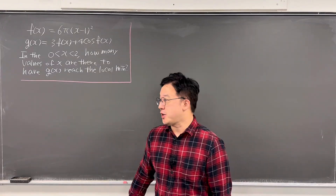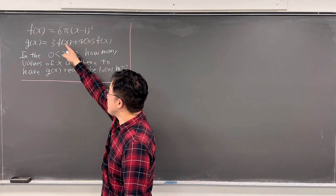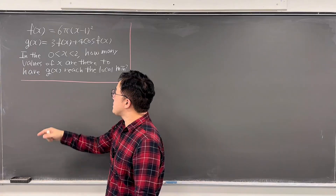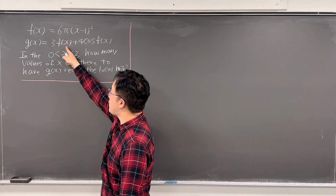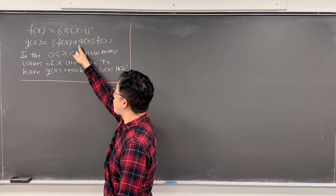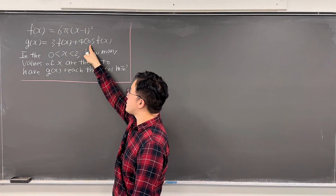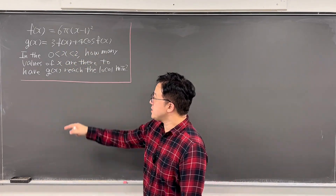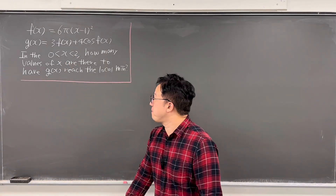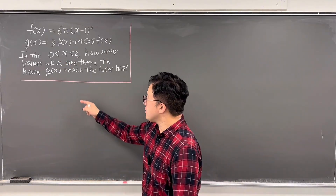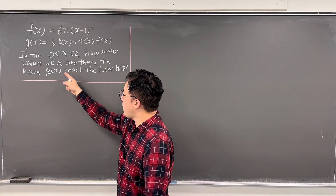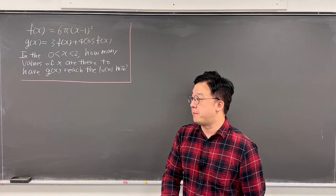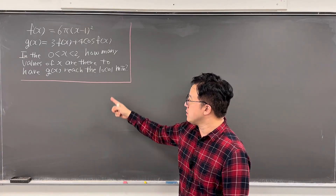Here's the question. f(x) is 6π(x−1)² and g(x) is 3·f(x) + 4·cos(f(x)). If x is between 0 and 2 exclusively, how many values of x make g(x) reach a local minimum?